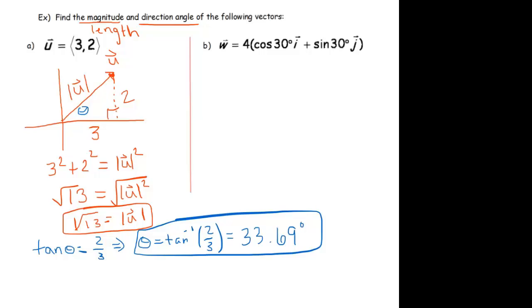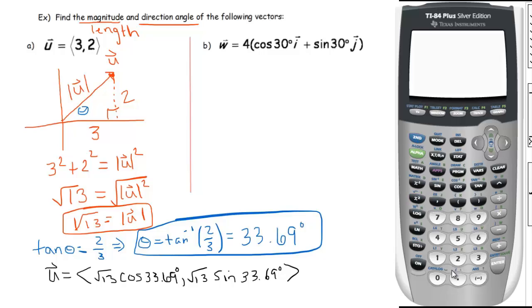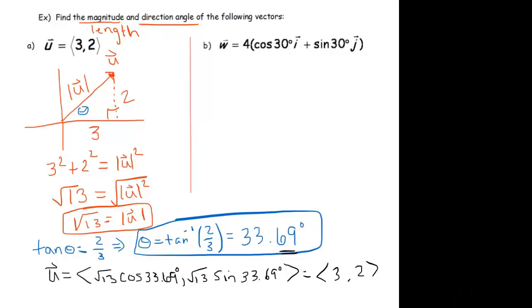Now, this is, what I'm about to do is not required, but I just want you to notice. If we now write u as square root of 13 times the cosine of 33.69 degrees, comma square root of 13 times the sine of 33.69 degrees, put that in the calculator. You get 3, and when we do root 13 sine of 33.69, you get 1.9999, but that's really a 2. It's just that we rounded this angle. In any event, I just wanted to make a connection there between component form and the magnitude and the direction angle.